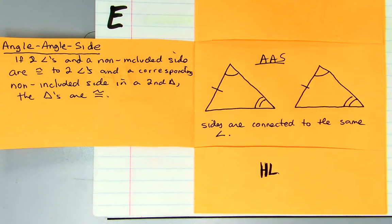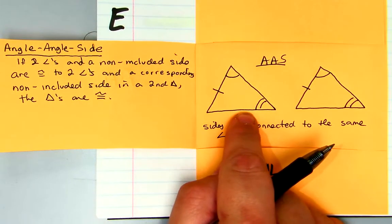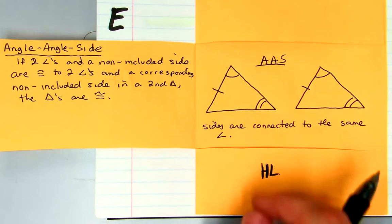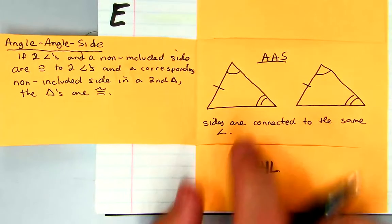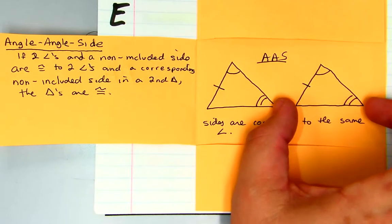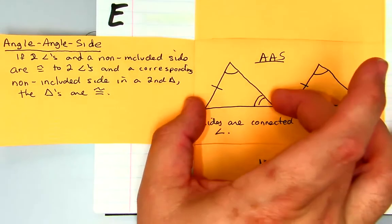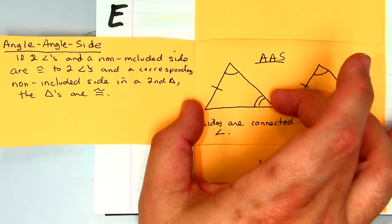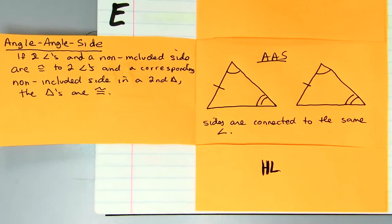In both triangles those sides are connected to the same angle that's congruent to each other. So that's the key. If this side was congruent to this side, then it wouldn't work. It has to make sense. Remember, the whole idea is that we have to be able to slide this triangle right on top of this triangle and they have to look identical to each other, just like putting one playing card on top of the other playing card.